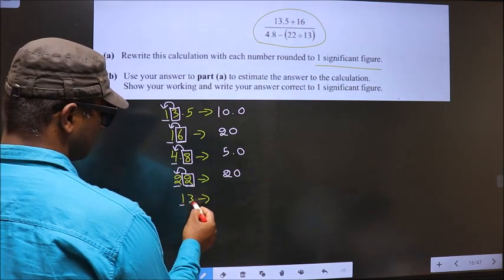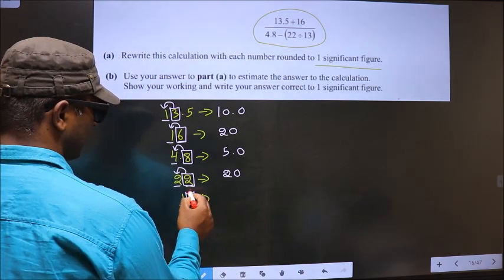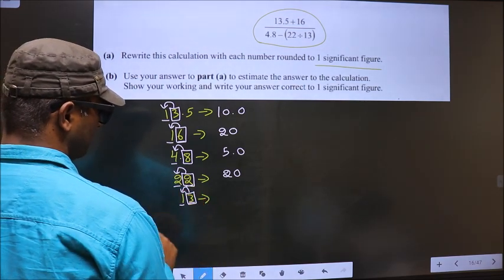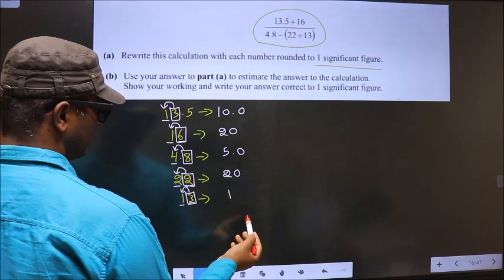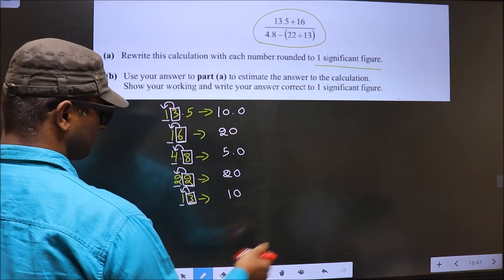Now here, first significant number, second significant number is 3. Which is less than 5. So no need to add any number to this. It will remain 1. And 0 in the rest of the place.